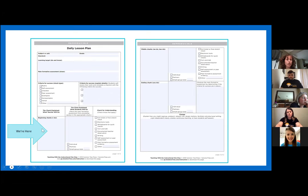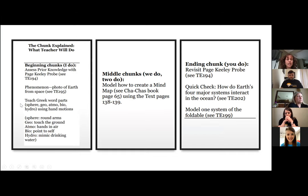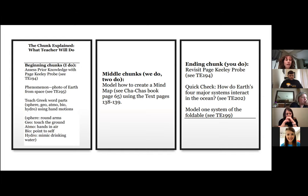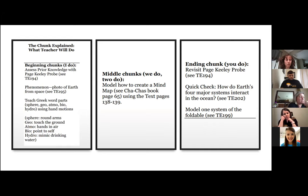In my beginning chunk, the first thing I did was assess prior knowledge with a probe from our science curriculum. We looked at a phenomenon — the photo of earth — to anchor their new learning. Then I explicitly taught the Greek word parts connected to each of earth's systems, and I added a movement component where we said hand motions with each one so they could remember what each part means — because our brain learns better when we add movement or music. The middle chunk had them doing active interaction with the text to learn about each system.